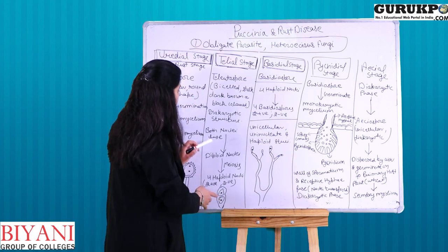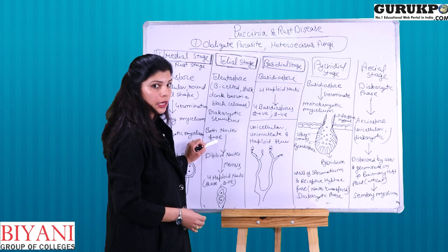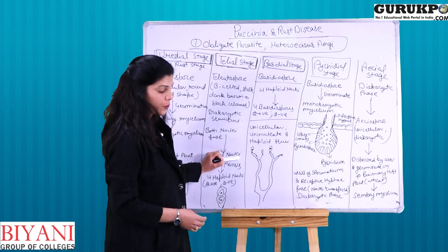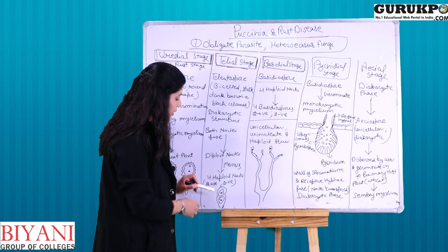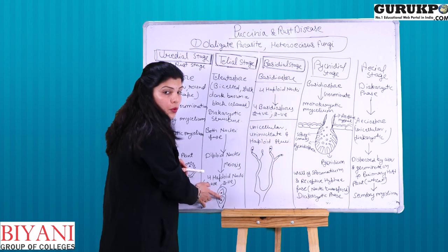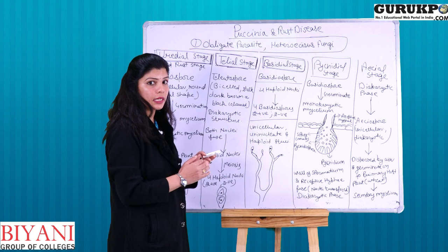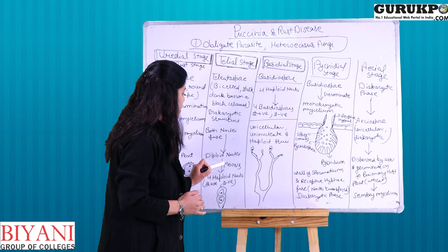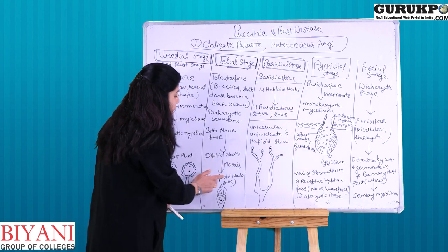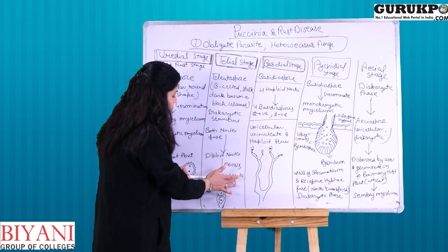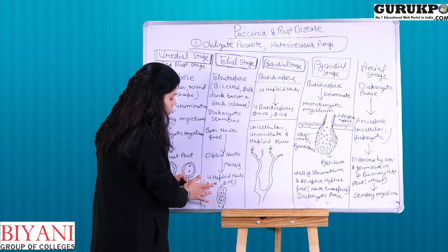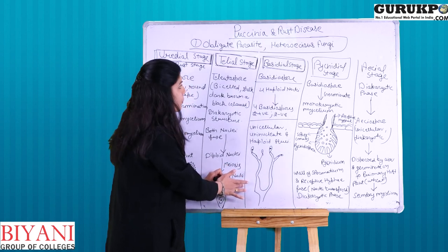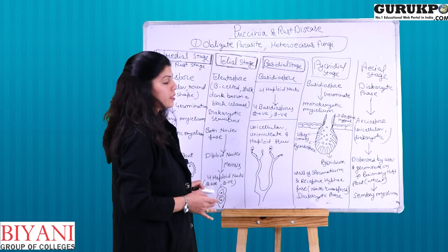In the telial stage, the two nuclei in the teliospores undergo fusion, forming a diploid nucleus. Through meiosis division, four haploid nuclei are produced — two of positive strain type and two of negative strain type.